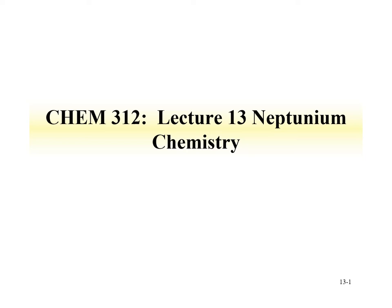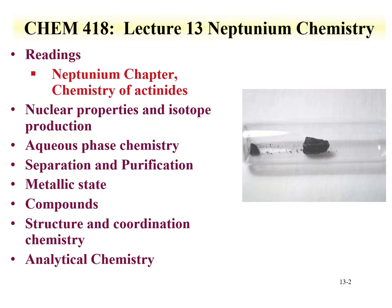Welcome to Lecture 13 for Chemistry 312. This lecture is on the chemistry of neptunium. The neptunium chapter from the chemistry of the actinides is the reading for this lecture. This lecture is going to cover nuclear properties and isotope production of neptunium, focusing on neptunium-237 since it's the longest-lived isotope and available in the largest quantities in which chemistry can be performed.